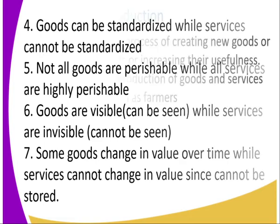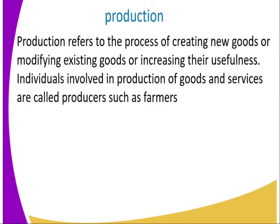Now let us look at production. Production refers to the process of creating new goods or modifying the existing ones and making them useful. For example, when a farmer is producing crops, they are doing the activity of planting a seed and harvesting.